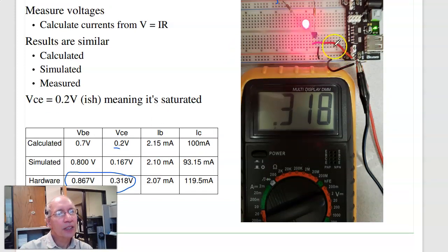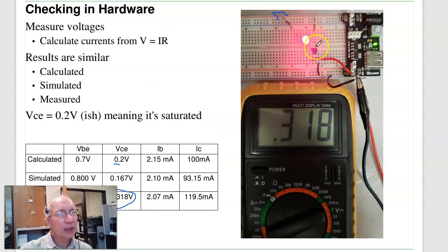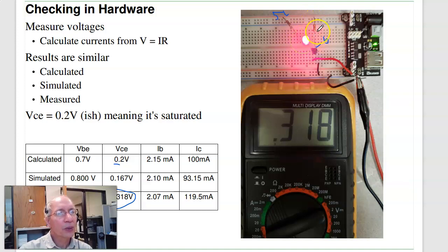So that's turning on and off an LED with electronics. If I disconnect the base connection, the LED turns off. Reconnect it, the LED turns on. With just a little bit of base current, I can turn the LED on and off.